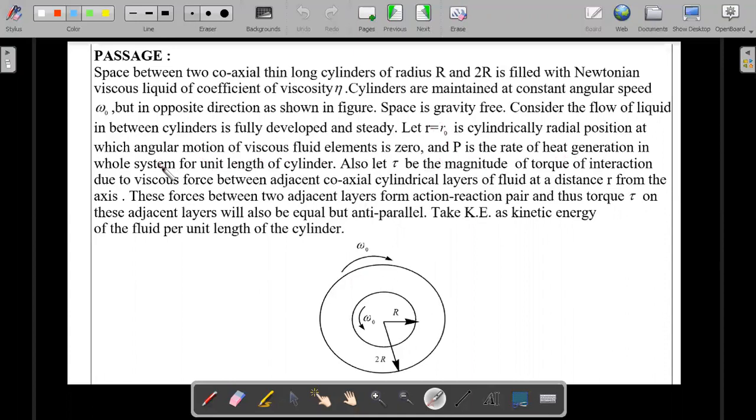And P is the rate of heat generation in the whole system for unit length of the cylinder. So in order to maintain a viscous flow there is a requirement of power and that power also would be at some rate dissipated in the steady flow. Let τ be the magnitude of torque of interaction due to viscous force between adjacent coaxial cylindrical layers of fluid at a distance r from the axis. So at any arbitrary distance r, due to cylindrical layers touching each other, there would actually be equal and opposite torques put up on each one of them. So that value as a function of r he is saying is τ. These forces between two adjacent layers form action-reaction pair and thus torque on these adjacent layers will also be equal but anti-parallel. Take kinetic energy as kinetic energy of the fluid per unit element of the cylinder. So this symbol KE would be used in the problem. You should realize that it is kinetic energy of the fluid per unit length.